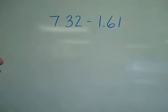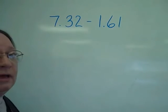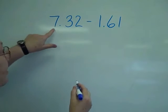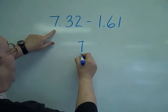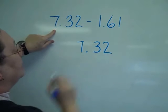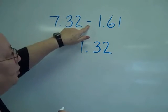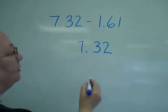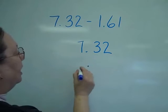When we subtract decimals, we again use the same rule as we do with addition: you want to line up the decimals. So I have 7 and 32 hundredths, and I'm going to subtract 1 and 61 hundredths. So the decimals have to be lined up.